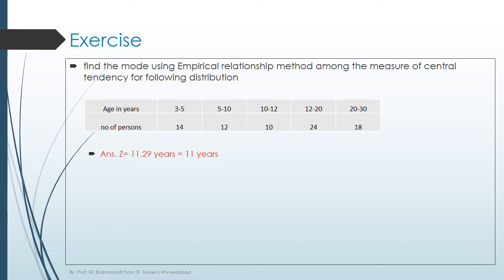To find the mode using empirical relationship method, first you need to find the x bar and the median. After getting the answer of mean and median, you are able to find the answer of mode using empirical relationship method.